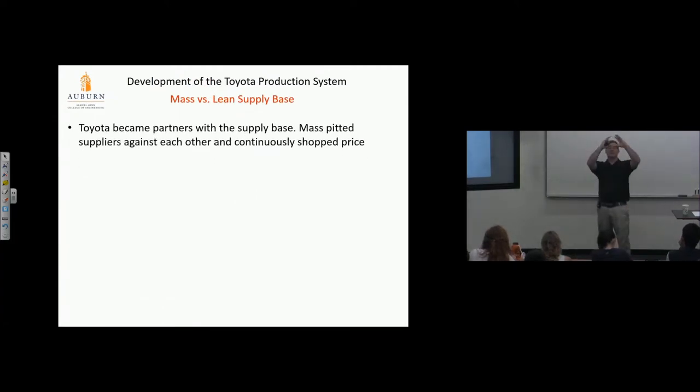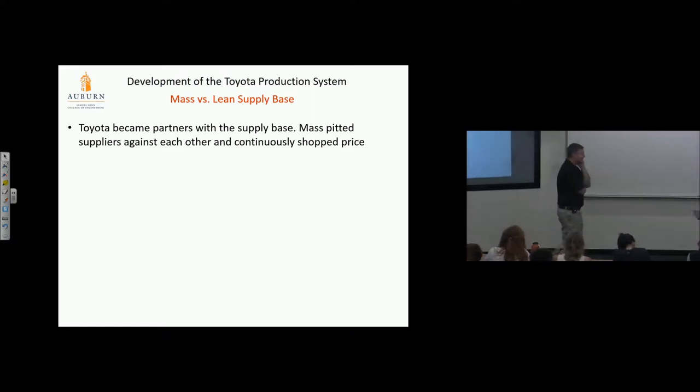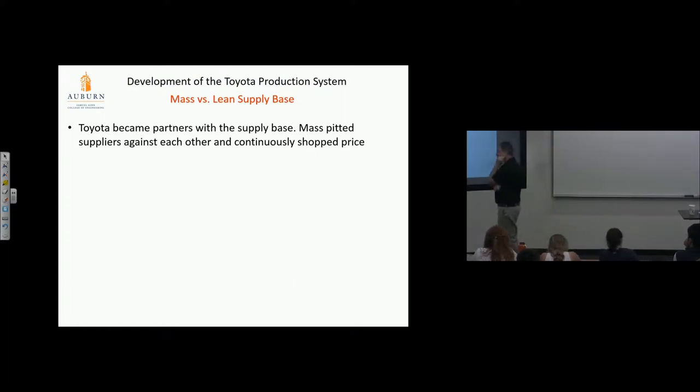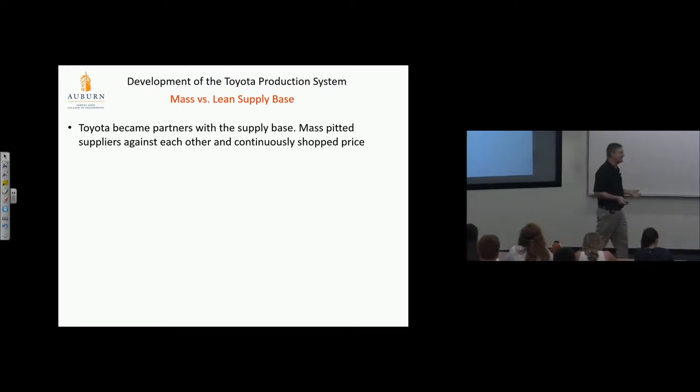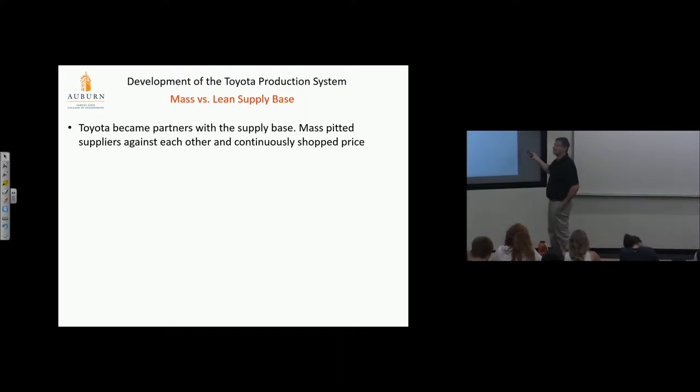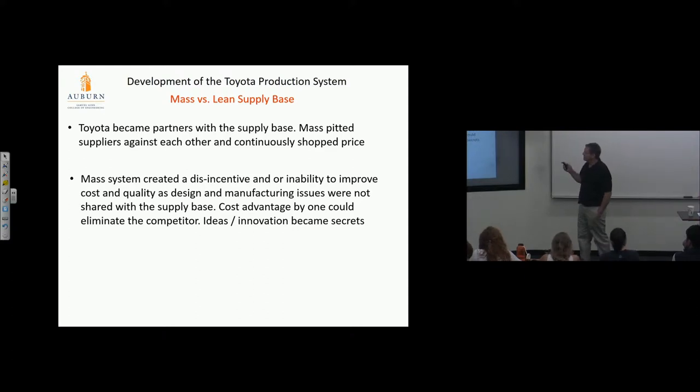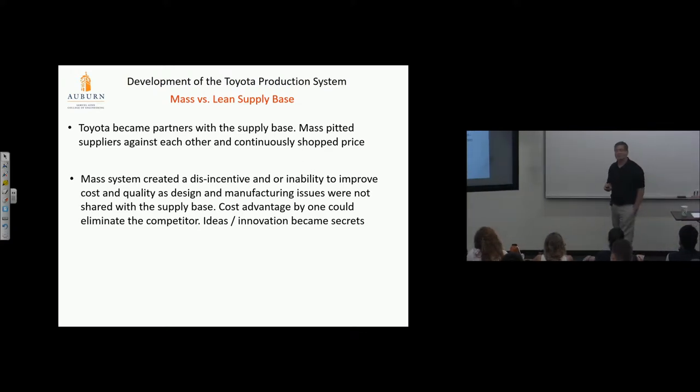Okay, the supply base. So here's the OEM assembly plant. Here's the supply base. Obviously, if that's not impacted, we're going to have minimal success with this system. So Toyota became partners with a supply base. Mass pit suppliers against each other, and they continually shop price. Do you remember my Deming quote? I was at the Deming lecture because I'm that old. And Deming asked the purchasing guy, what do you do? The guy said, I work in purchasing for GM. And Deming said to him, oh, maybe my grandson can get a job with you because he knows the difference between a high and a low number. That was his point. You don't think. You don't care about the process. You're not concerned with how well you develop your product. You don't care how it integrates into the manufacturing process. You care whether it's a dime instead of 15 cents. That's all you care about. And that's how mass operates. That's not how Toyota operates.